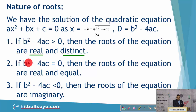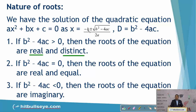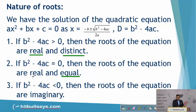Second case: if b² − 4ac = 0, that means this term is 0. Once you are adding 0 to −b and then subtracting 0 from −b, in both cases the result will be the same. So in this case, the roots are equal as well as real.